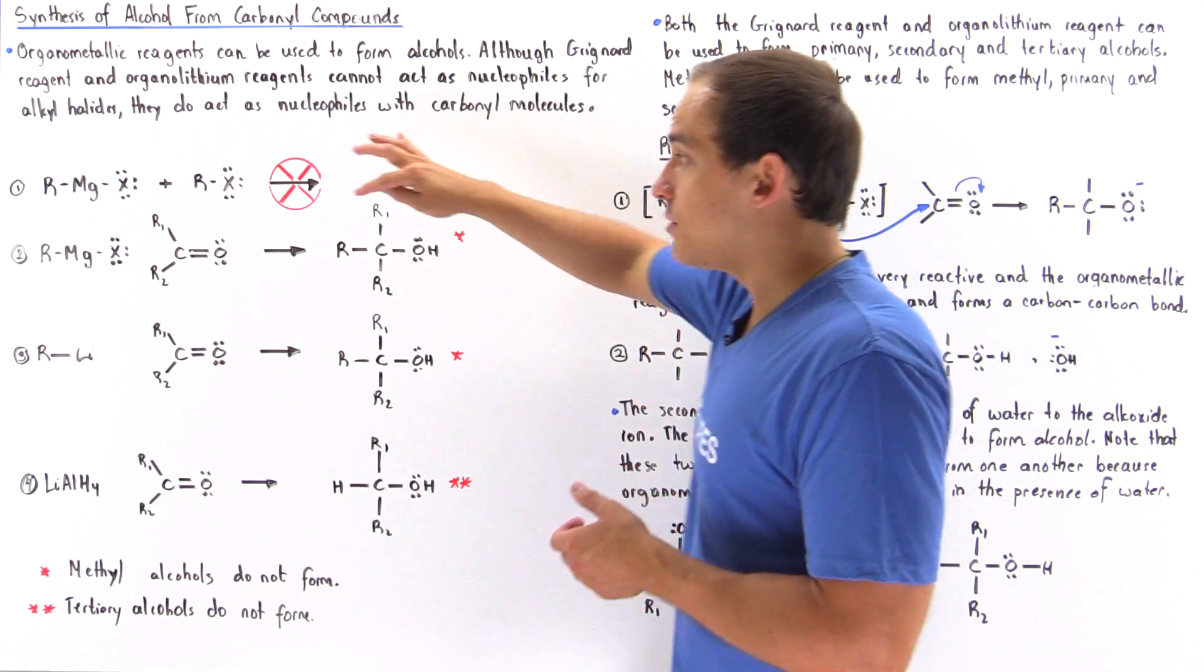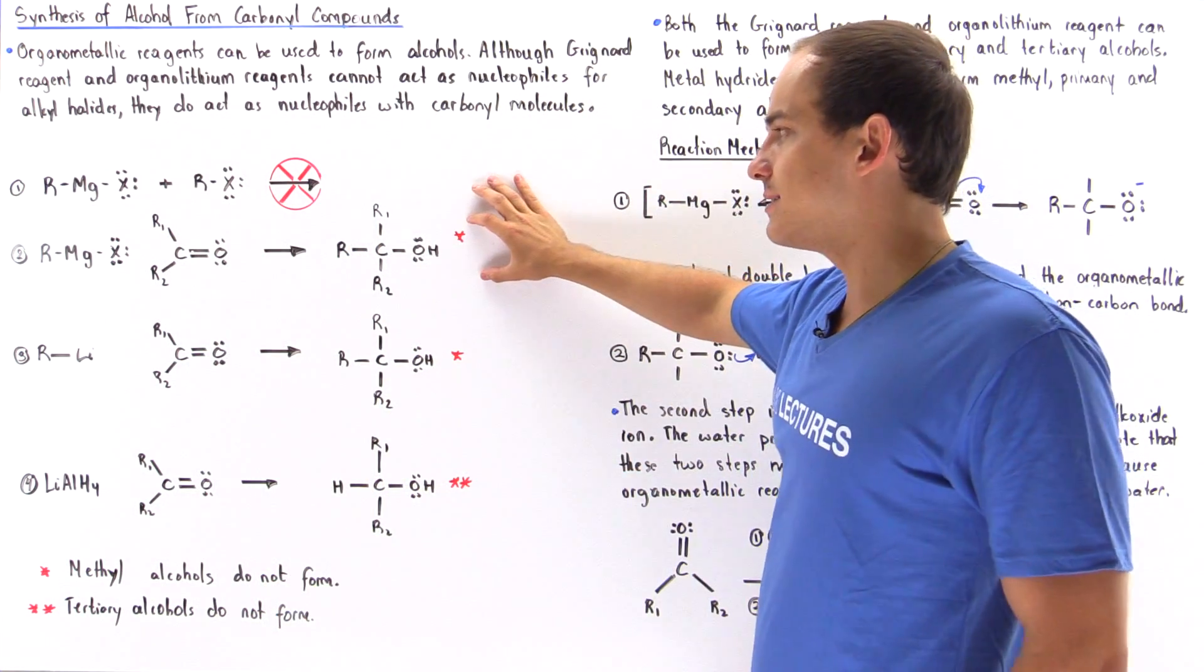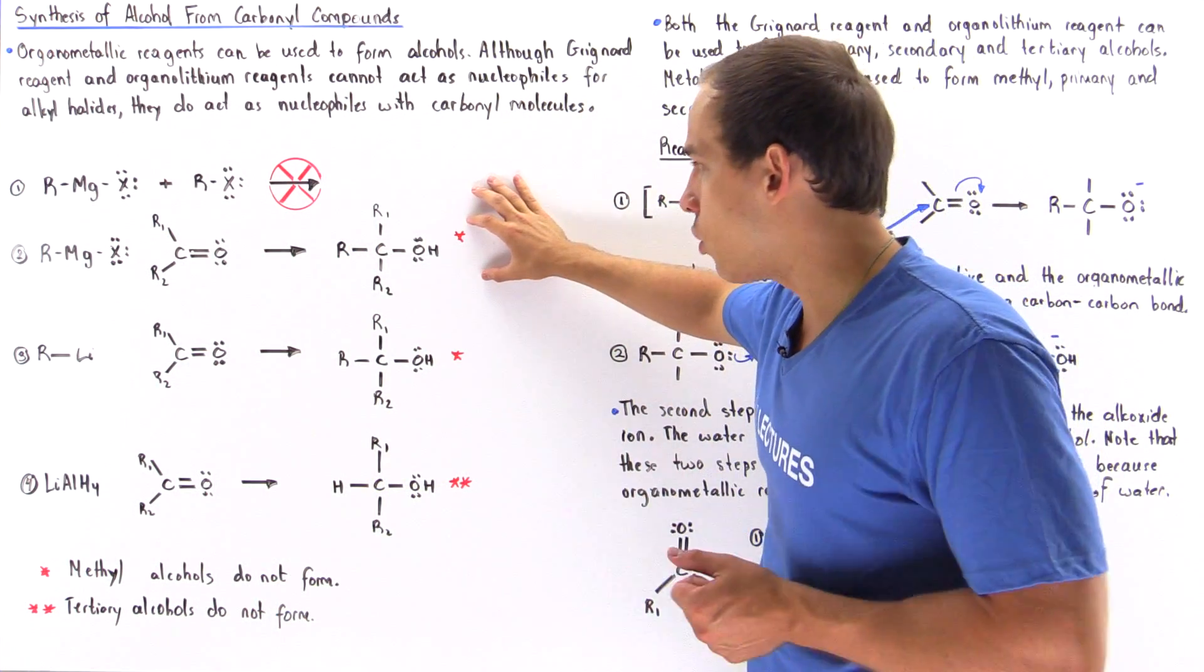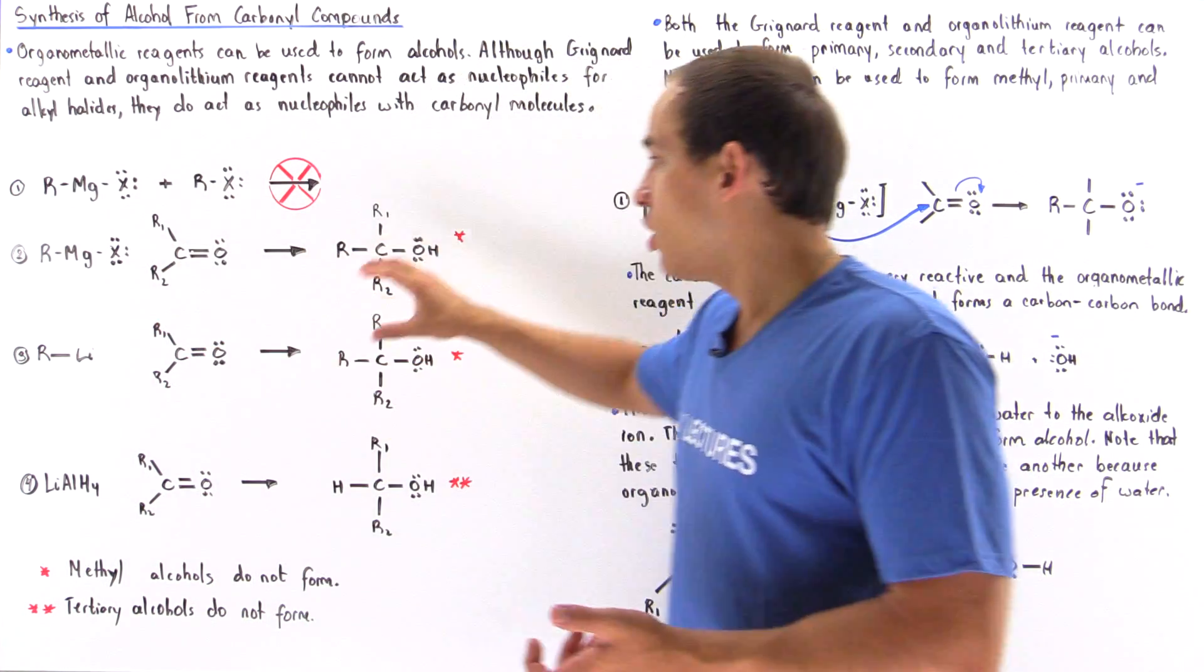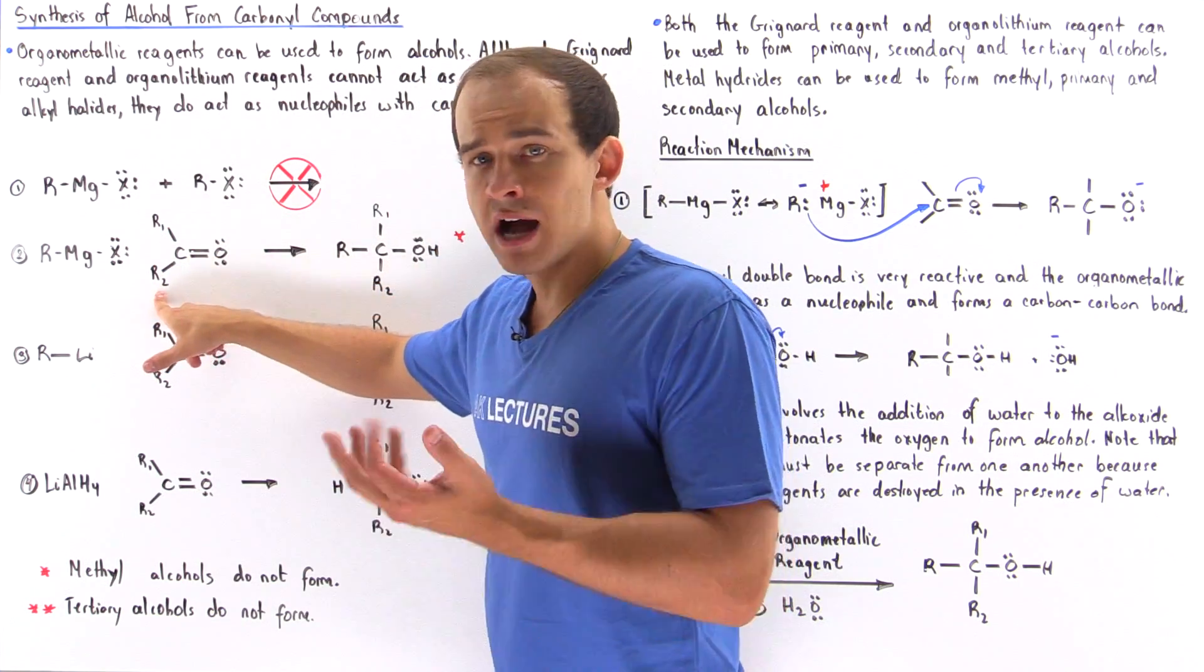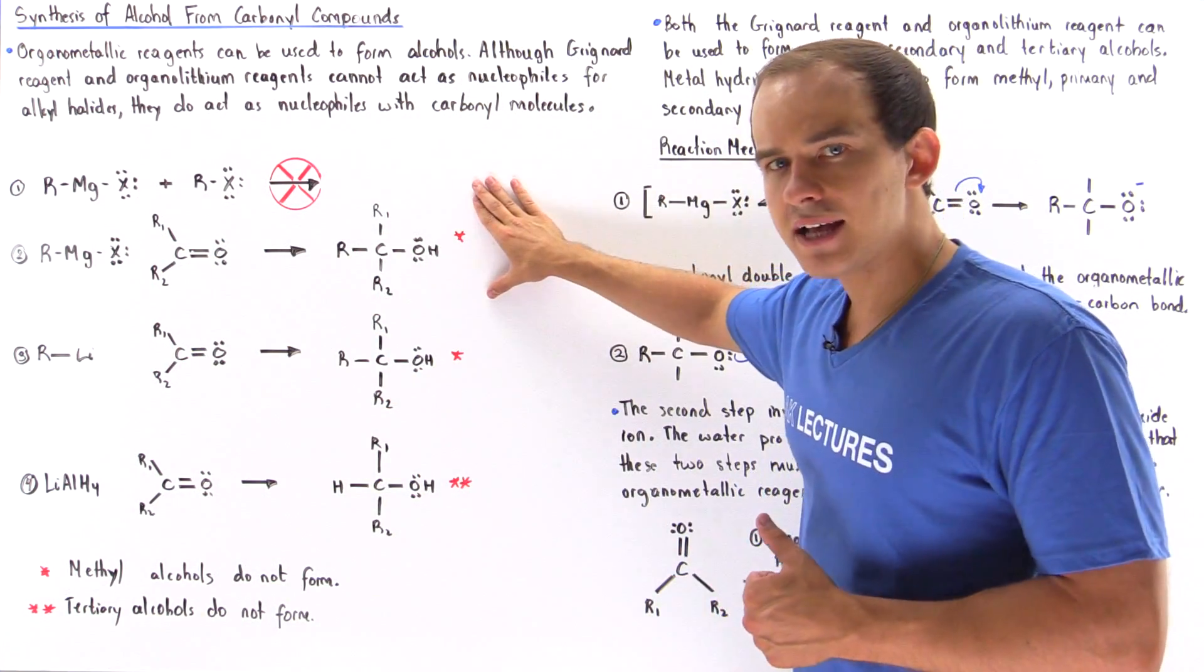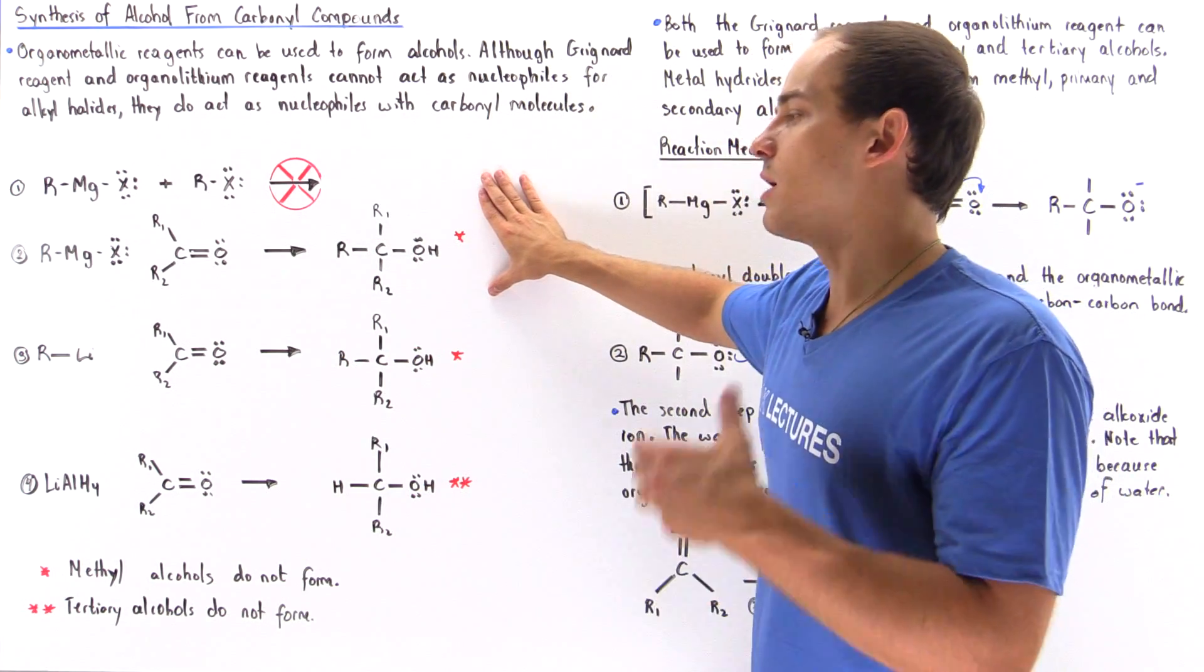Now, depending on these R groups, we can either form a primary, secondary, or tertiary alcohol. If these two groups are H atoms, we form a primary alcohol. If one of these is H and the other one is a hydrocarbon, we form a secondary. And if both are hydrocarbons, we form a tertiary.